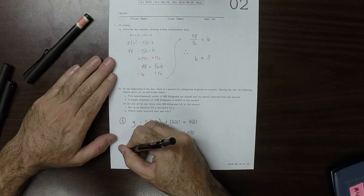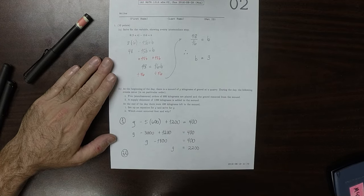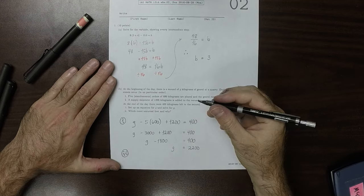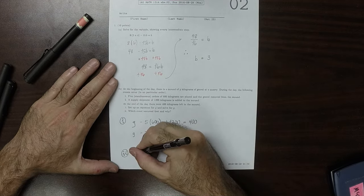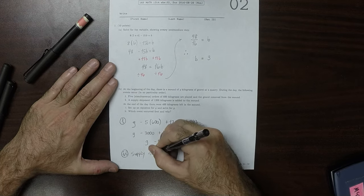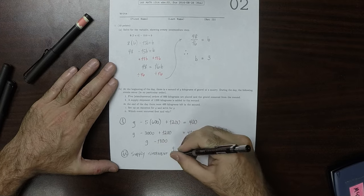Part II. Which event occurred first? The event that occurred first is the supply shipment occurred first.